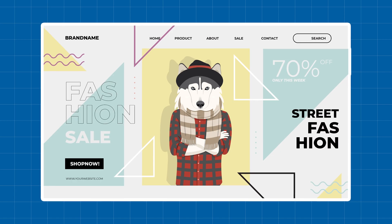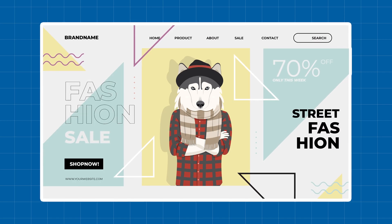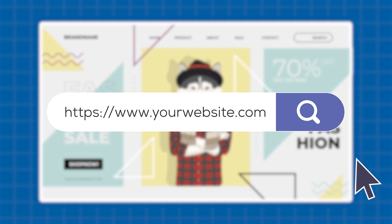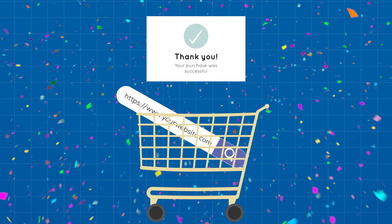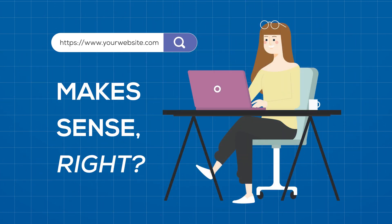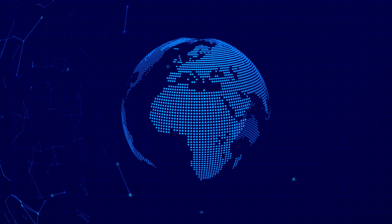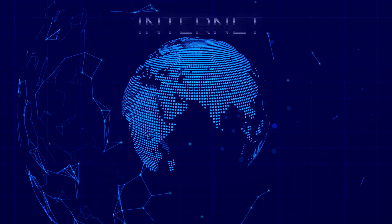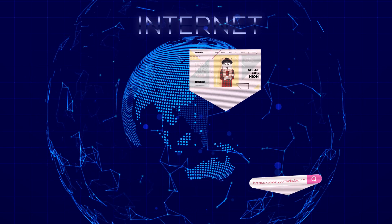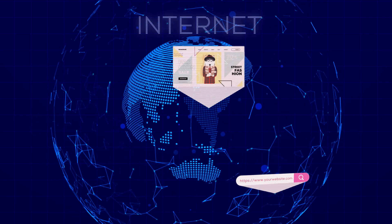In the simplest way possible, a domain name is your website name. It's what you type into the search bar to go to various websites. You buy the name that you want and people use it to reach your website. But how exactly does the internet link a specific website with a specific website name?